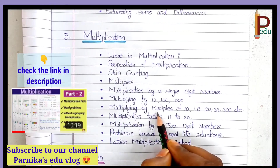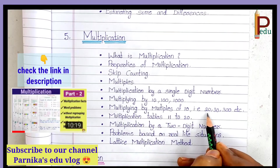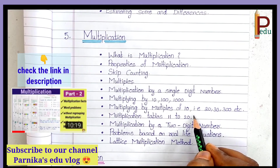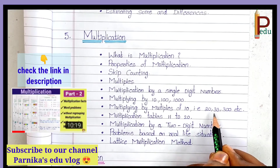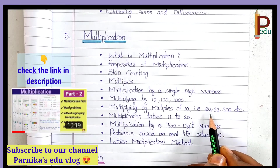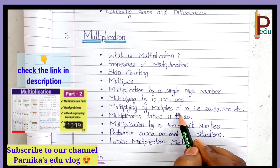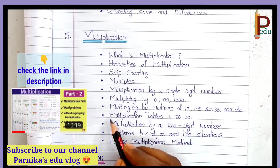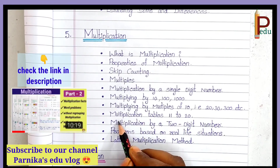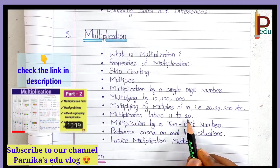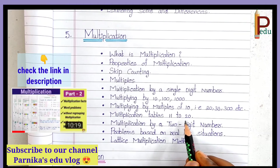Next, Multiplying by Multiples of 10 — that is 20, 30, 300, etc. Using rules we can easily find the answer. Next, Multiplication Tables 11 to 20 — we will learn these tables. By Class 3, at least the 10 times tables should be perfect.